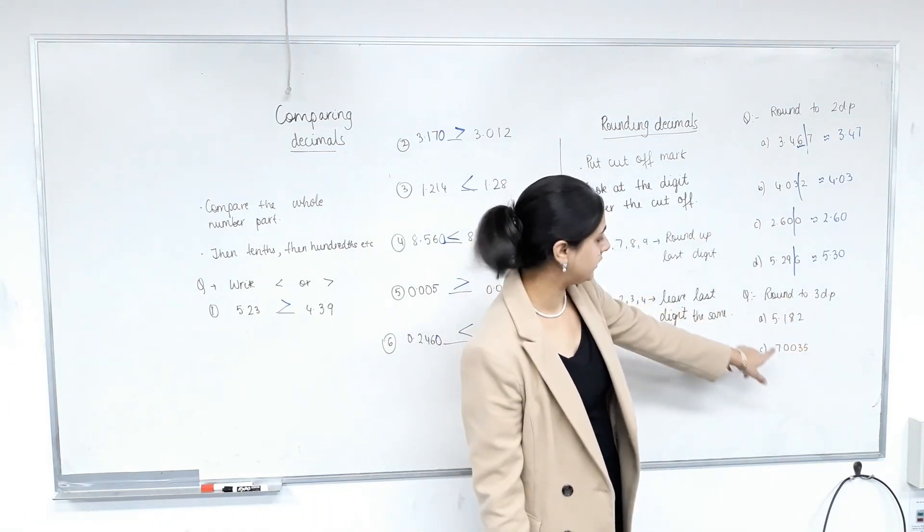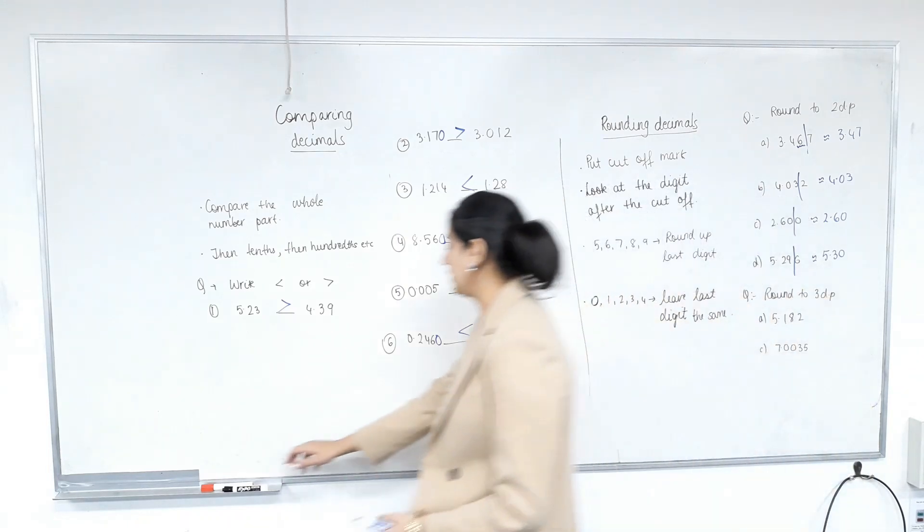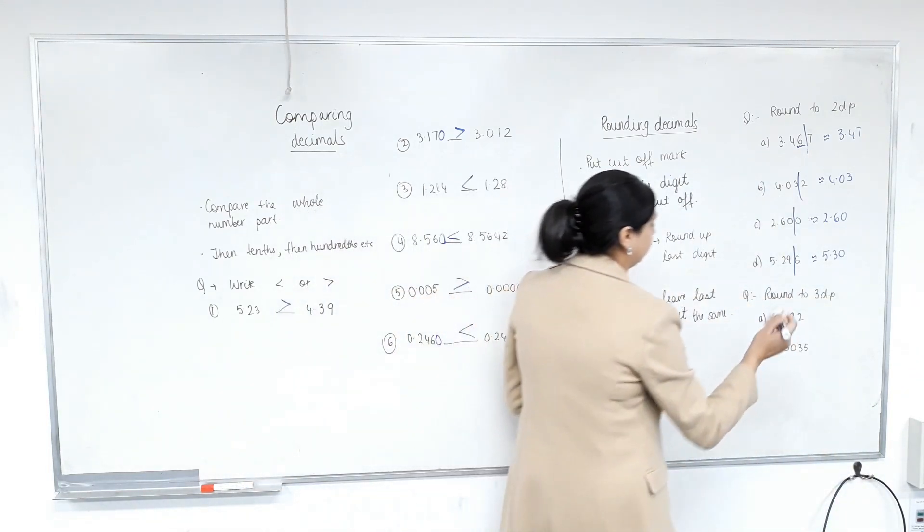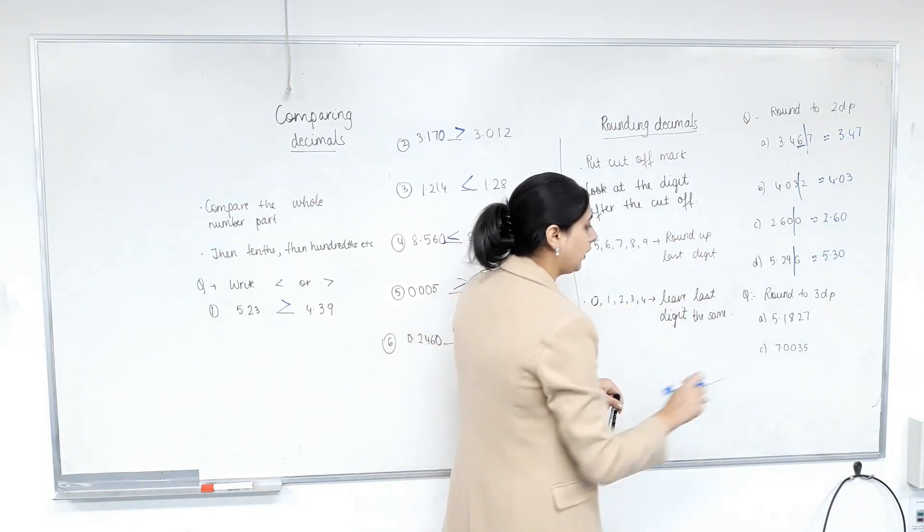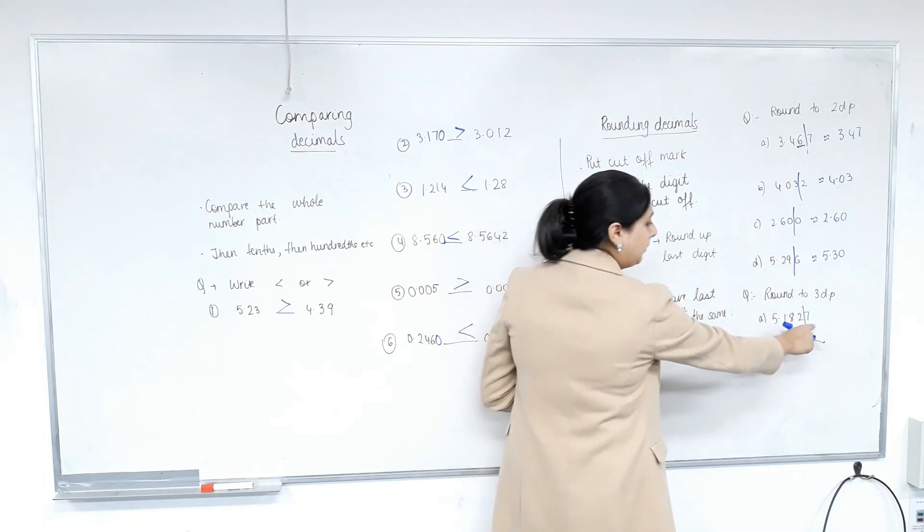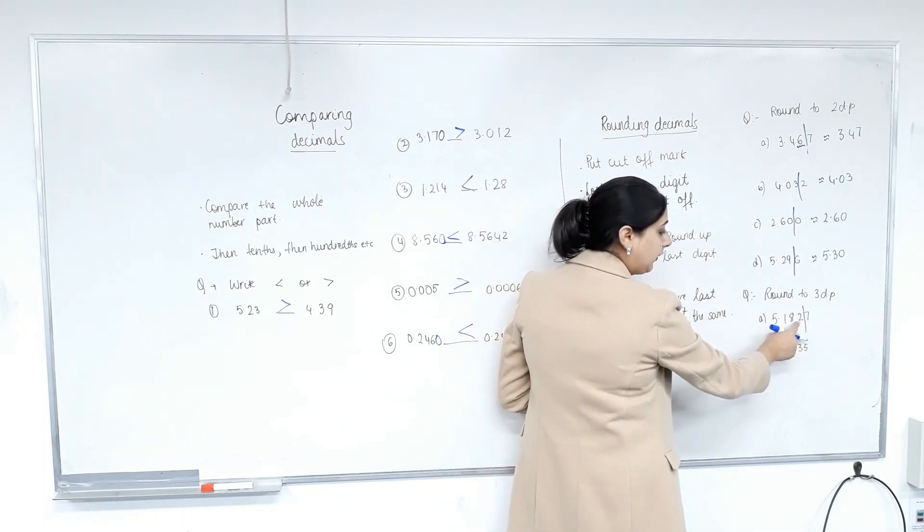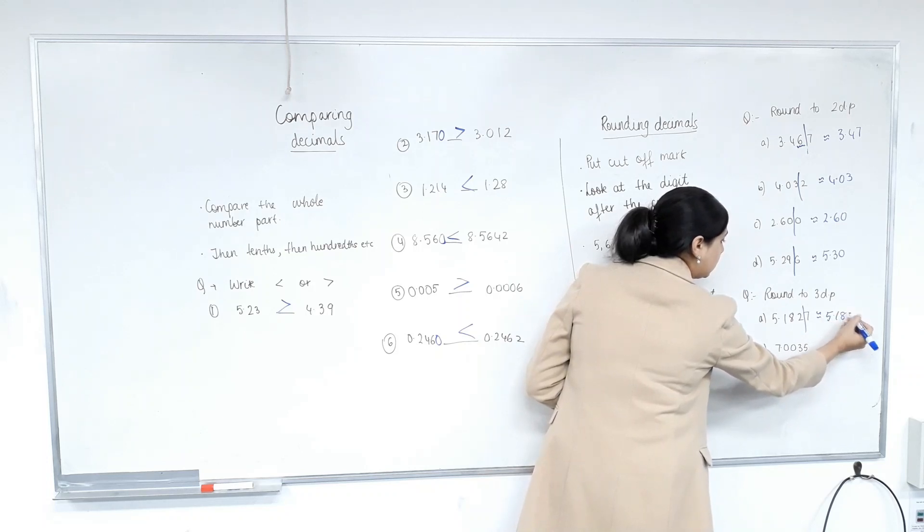Round to three decimal places. Just going to first make it a four decimal place number. One. Okay? So one, two, three. Cut off mark. The number here is greater than five. So this will be rounded up. Five point one eight three.